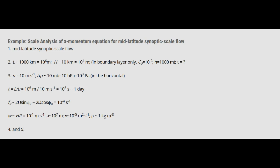Let's look at this example of the x-momentum equation for mid-latitude synoptic scale flow. So in this case, it's mid-latitude synoptic scale flow. The length is about 1,000 kilometers, which is 10 to the 6 meters. The height is about 10 kilometers, which is 10 to the 4 meters. And if we were in the boundary layer only, we would find that the friction drag coefficient is 10 to the minus 2, and the height of the boundary layer is about 1,000 meters.